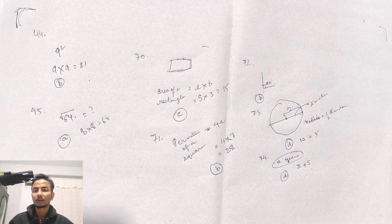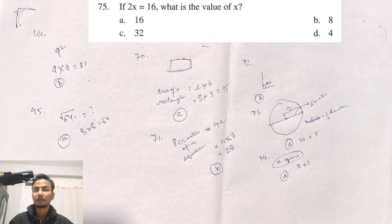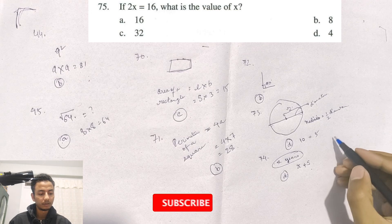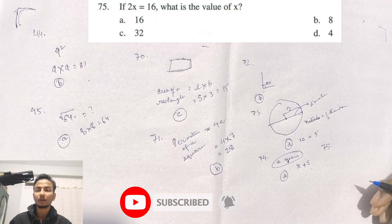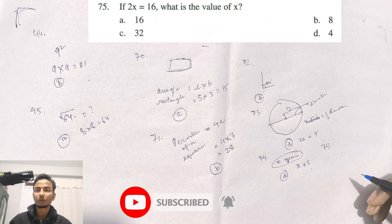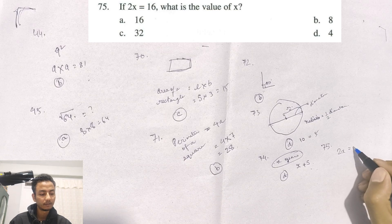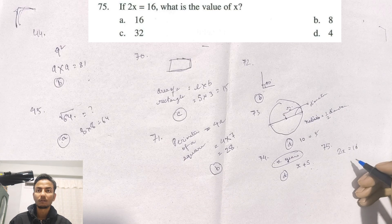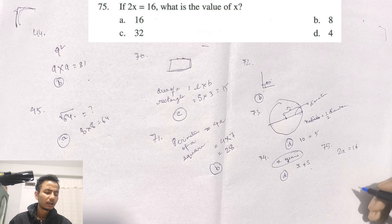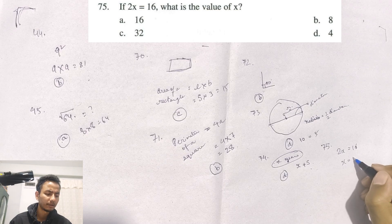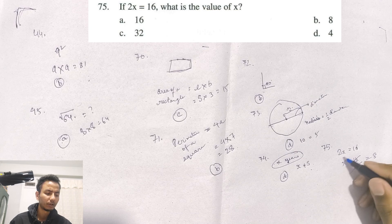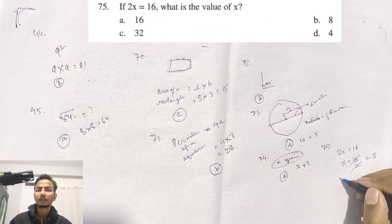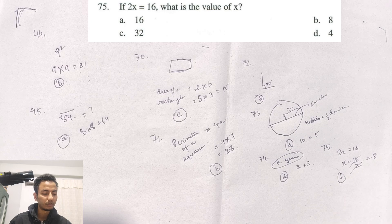Question number 75: If 2X is equal to 16, what will be the value of X? The value of X is 8. The correct option is B.